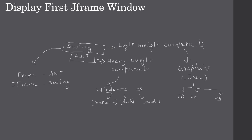These are all containers as well as components. Label is an AWT Abstract Windowing Toolkit component. Since we see 'J' in front of Label, we call JLabel a Swing component.